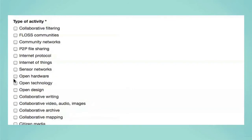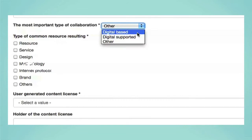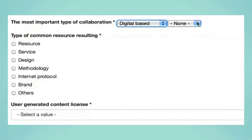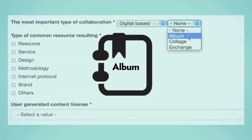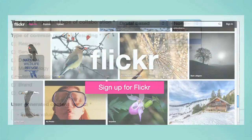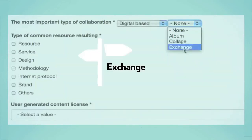The following fields are a little more demanding but very important to understand the project. One of them is the most important type of collaboration — this means the most frequent type of peer-to-peer collaboration through which the common resource is generated. A digital-based type of collaboration means the resulting resource is based on the digital environment. This could be: Album, a sum of actions as in platforms like Flickr; Collage, a combination and integration of actions like in Wikipedia; or Exchange, a common space hosting bilateral exchange of actions like in cohousing.